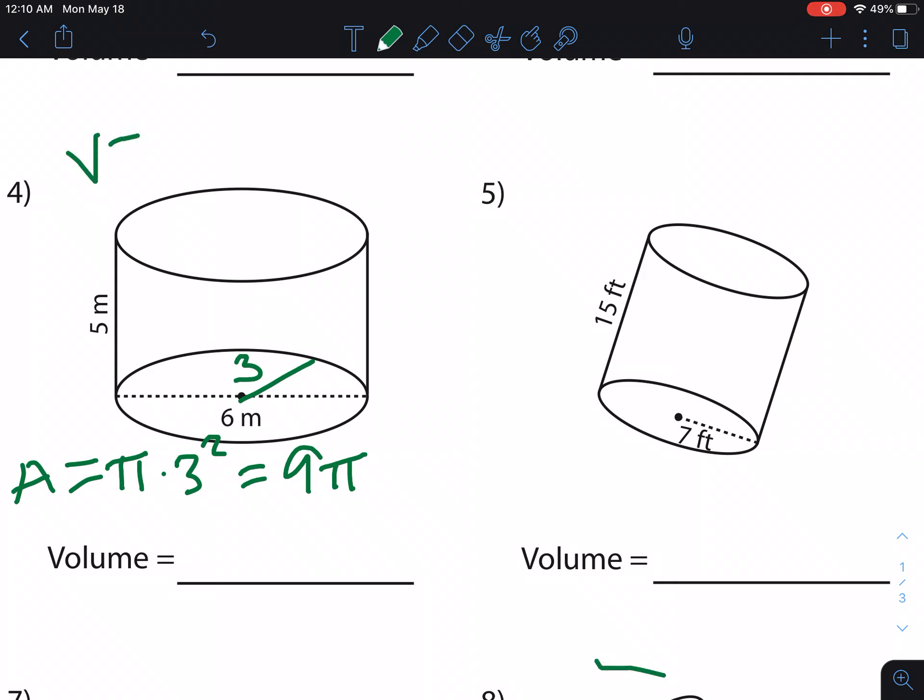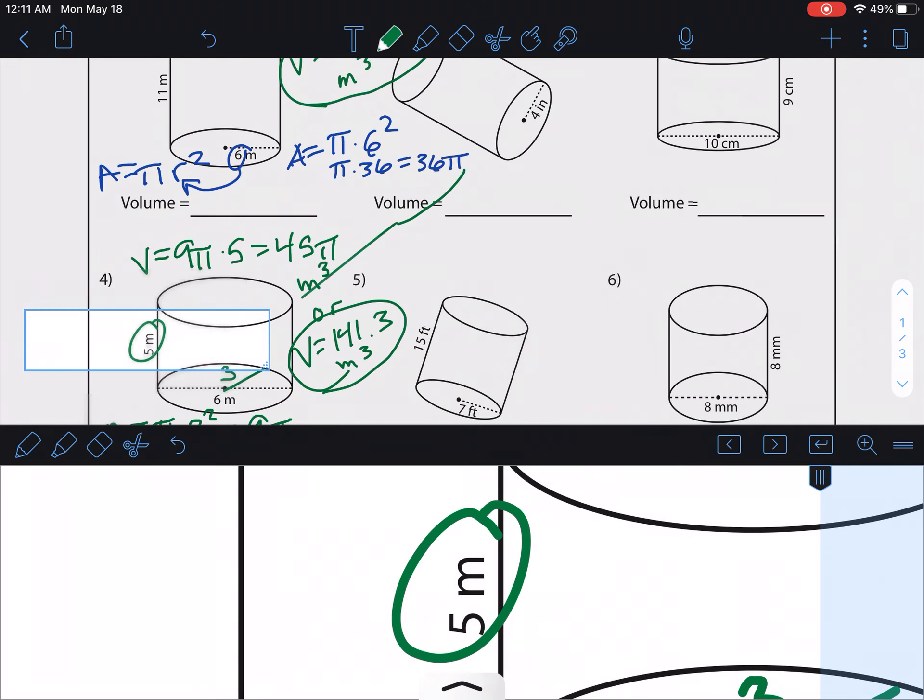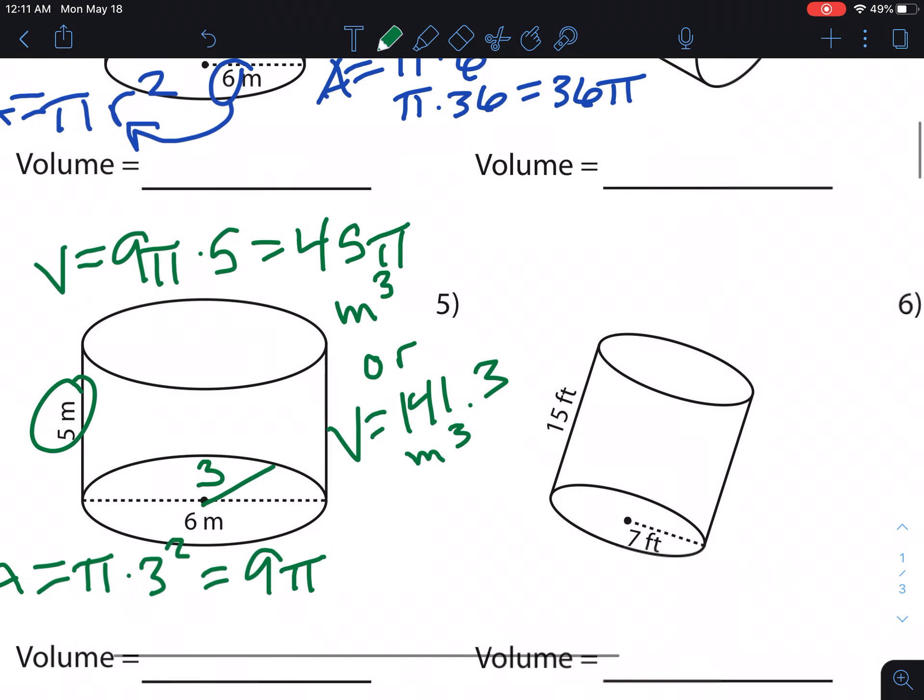And then, for our volume, again, we're just going to do the area of the base shape, which is 9 pi, times the height, which is 5. So, times 5. So, our volume is equal to 45 pi. And, again, this is meters, so meters cubed. Or, if you want to multiply it all the way out, you should be able to do this both ways. So, 45 times 3.14 equals 141.3 meters cubed. So, these are the two acceptable ways to leave your answer. 45 pi meters cubed or 141.3 meters cubed. Those are the cylinders.